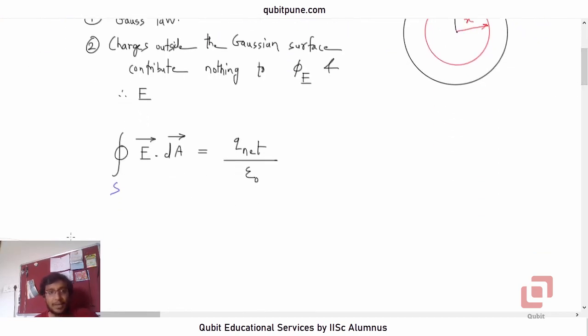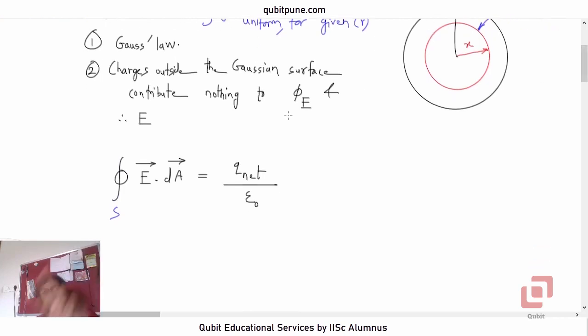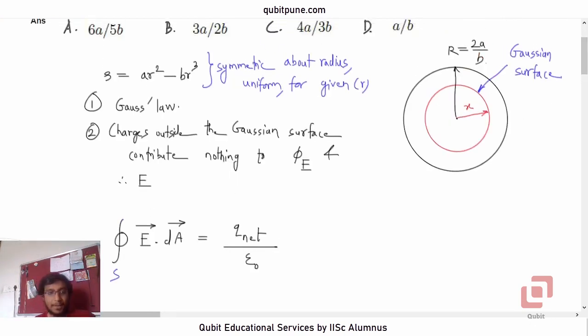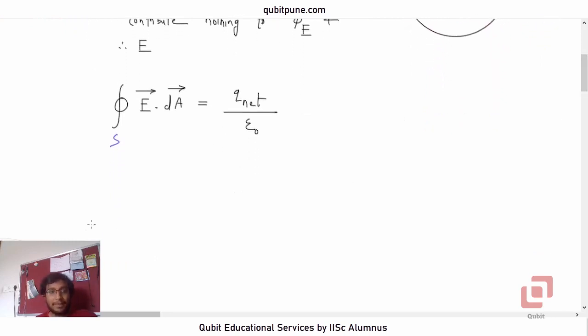Now, as we have said that electric field and electric flux will both become zero, what we have to do now is we have to just find the net charge enclosed by our Gaussian surface s. Net charge enclosed by the Gaussian surface s, that is the red color.